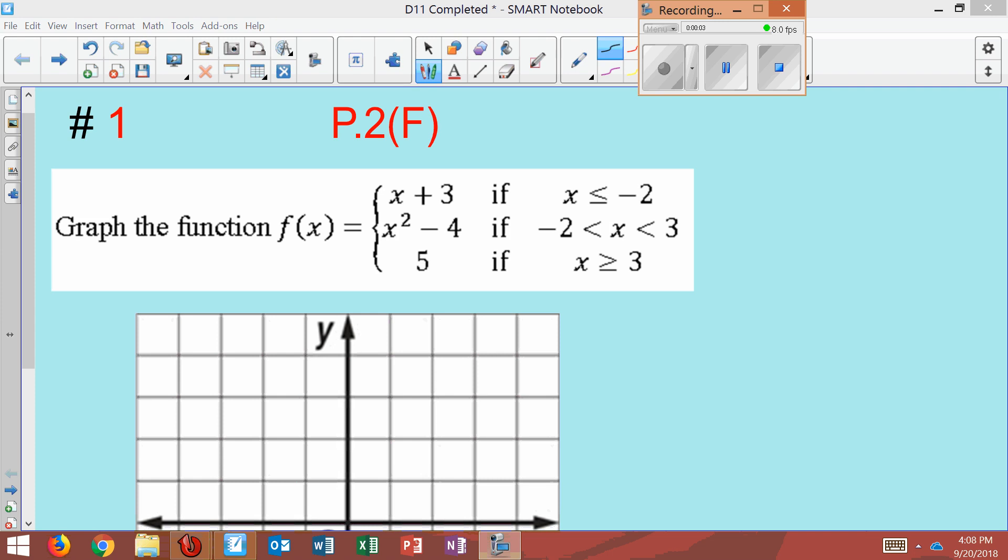Number 1. Graph the function f of x equals a piecewise function here, x plus 3 if x is less than or equal to negative 2, x squared minus 4 if x is between negative 2 and 3, and 5 if x is greater than or equal to 3.